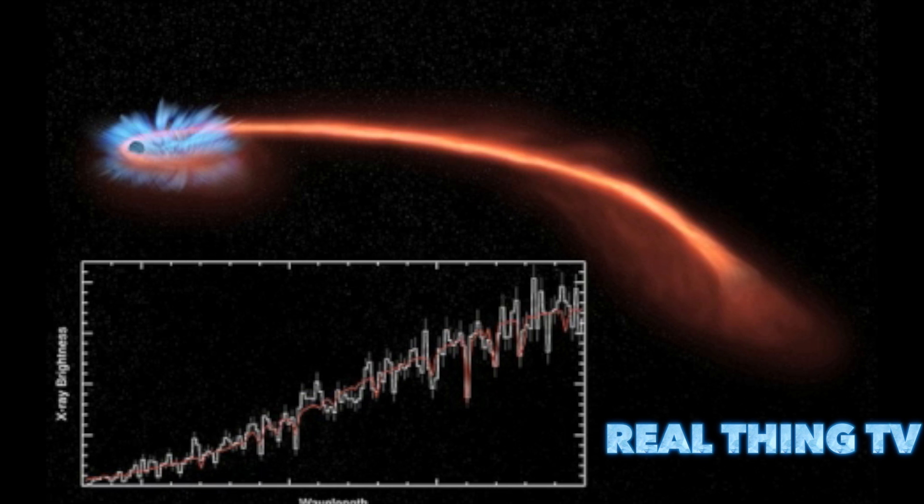In these events, called tidal disruptions, some of the stellar debris is flung outward at high speeds, while the rest falls toward a black hole. This causes a distinct X-ray flare that can last for years. Scientists say that the event is the closest tidal disruption discovered in about a decade.